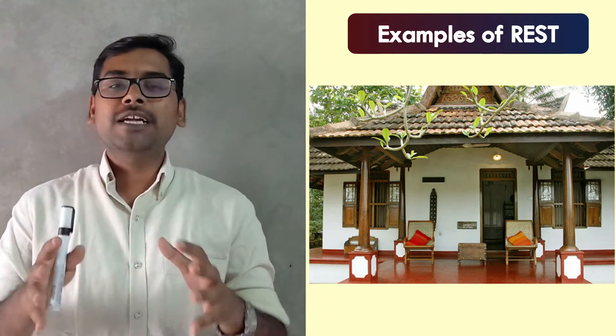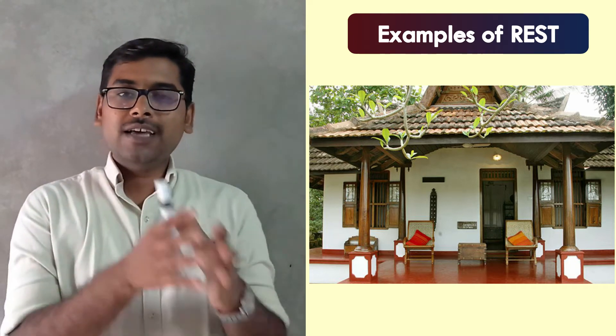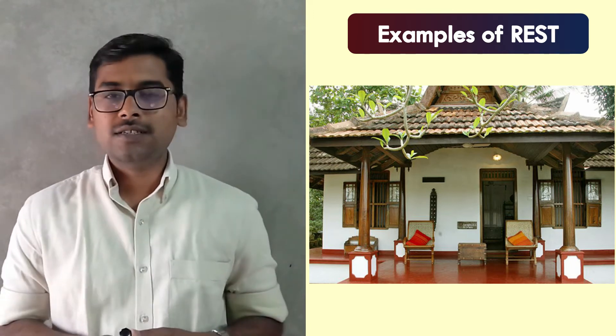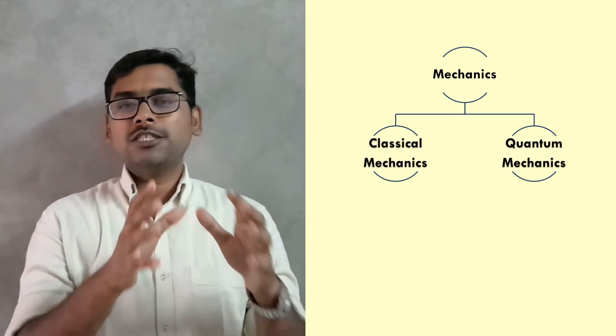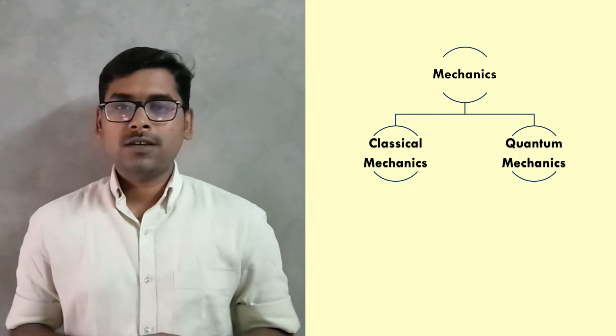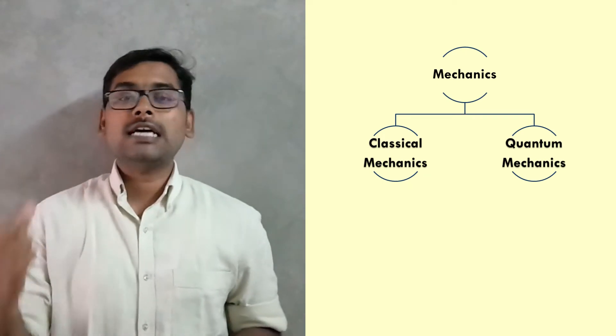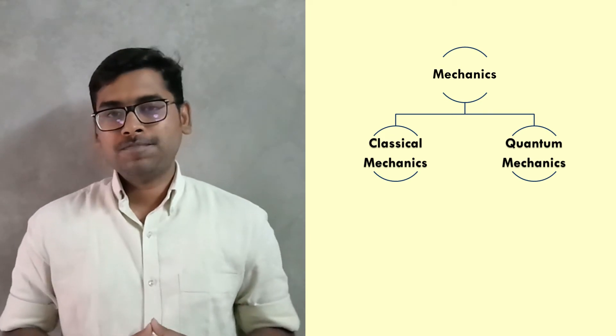The complete and correct definitions will be discussed in the next video. In physics, the study of objects in motion or at rest comes under a branch known as mechanics, and this branch can be further divided into two categories: number one, classical mechanics; and number two, quantum mechanics.